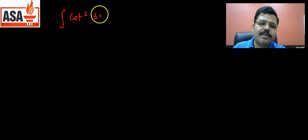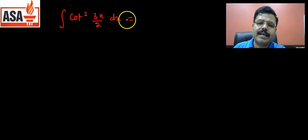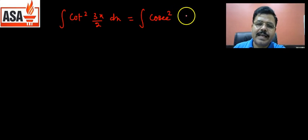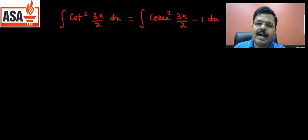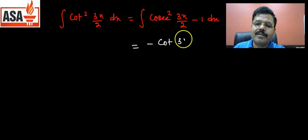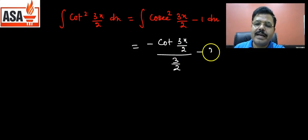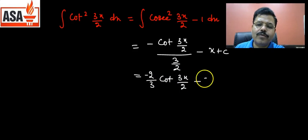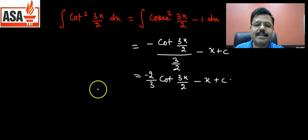For example, ∫cot²(3x/2) dx. We write cot² as cosec² − 1, so this becomes ∫[cosec²(3x/2) − 1] dx. The integration of cosec²(3x/2) is −cot(3x/2) divided by (3/2), and the integration of 1 is x. So the answer is −(2/3)cot(3x/2) − x + c.